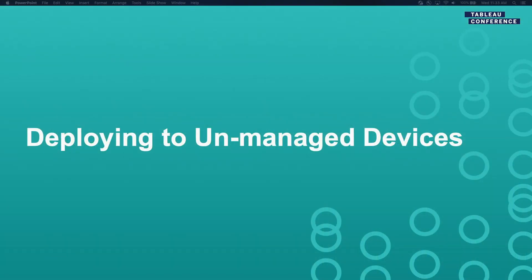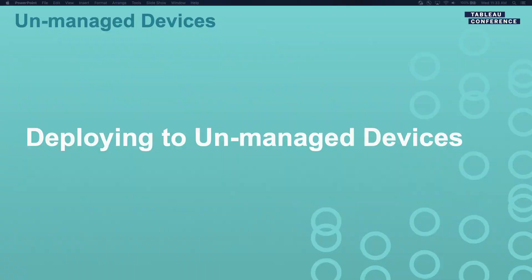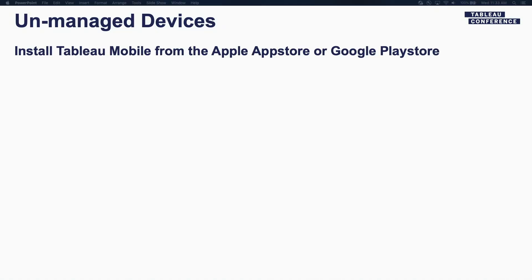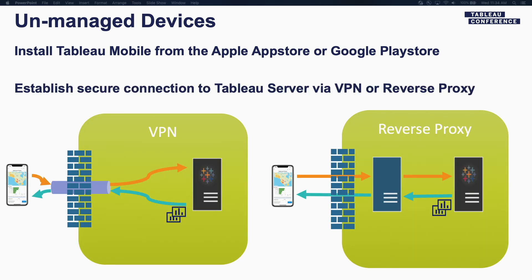We have three strategies for deploying Tableau Mobile successfully within the enterprise. The first one is around unmanaged devices. This is typically the case when your department or your organization does not use one of these enterprise mobility management or EMM solutions. This is when you are just going to go and install Tableau Mobile from either the Apple App Store or the Google Play Store directly — you don't have to go through your IT admin to get that. In this case, the secure connection or the trust is going to be established using either a VPN — that's a virtual private network — or you can use a reverse proxy, both of which Shyam covered previously. That's how you establish that secure communication between Tableau Mobile and Tableau Server Online. That's unmanaged, that's the first one.